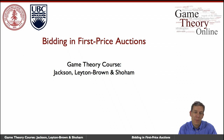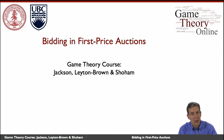Bidding in first price auctions has to be solved as a Bayesian equilibrium. We're not going to have dominant strategies, and things are going to be more complicated.